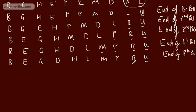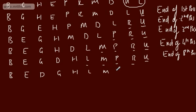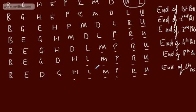Pass six: B and E? No. E and G? No. G and D? Yes, swap. G and H? No. We're now locking down another letter: H. End of sixth pass — U, R, P, M, L, and H are in place. So after each pass, I've got one more item in the correct position.